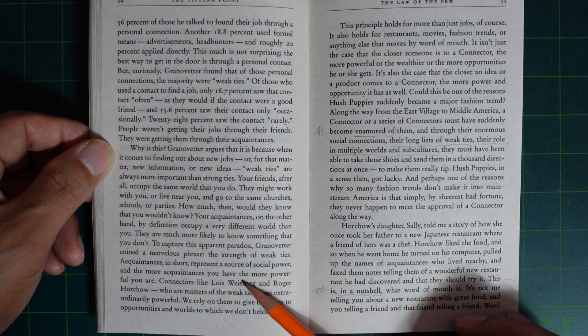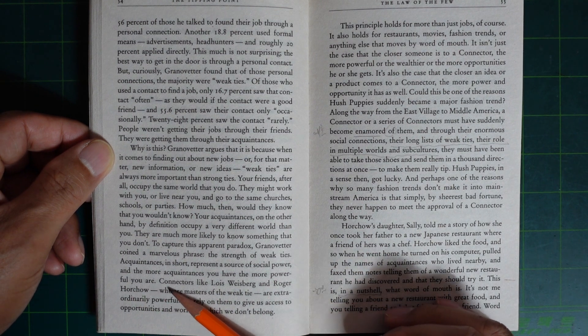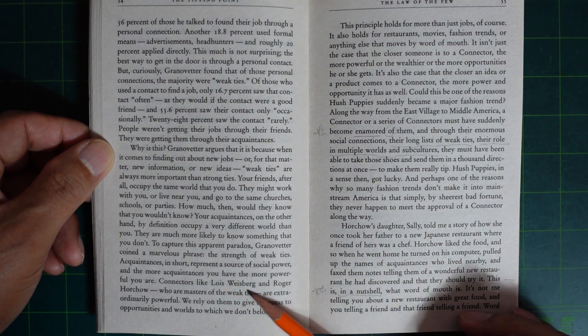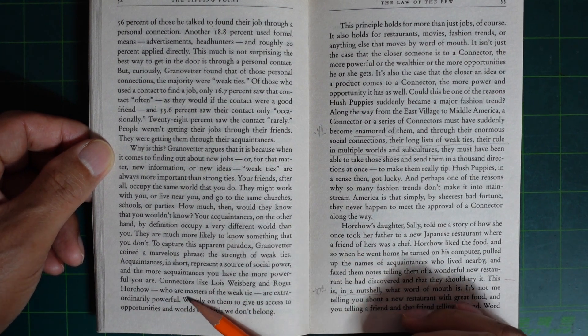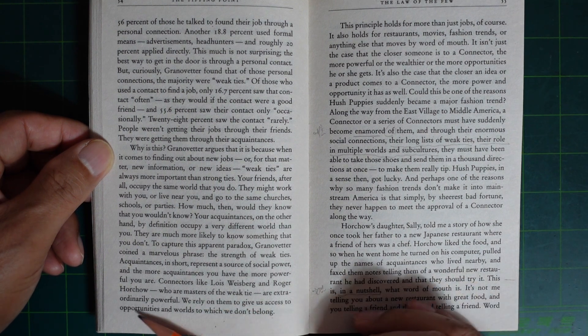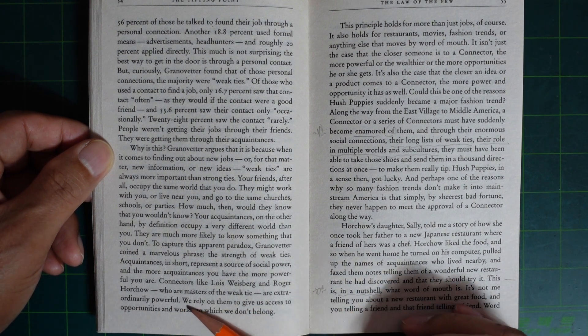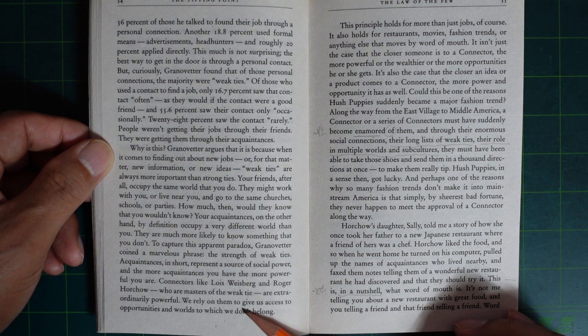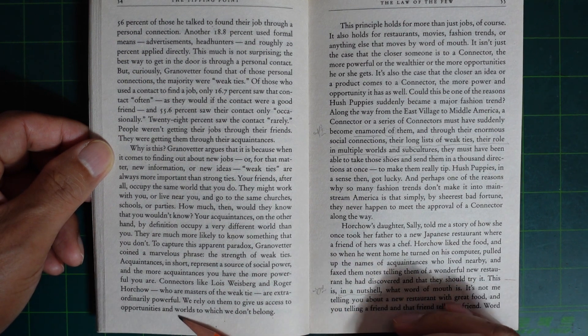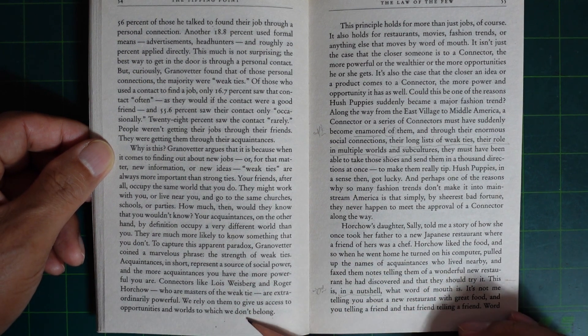The more acquaintances you have, the more powerful you are. Connectors like Lois Weisberg and Roger Horchow, who are the masters of the weak tie, are extraordinarily powerful. We rely on them to give us access to opportunities and worlds to which we don't belong.